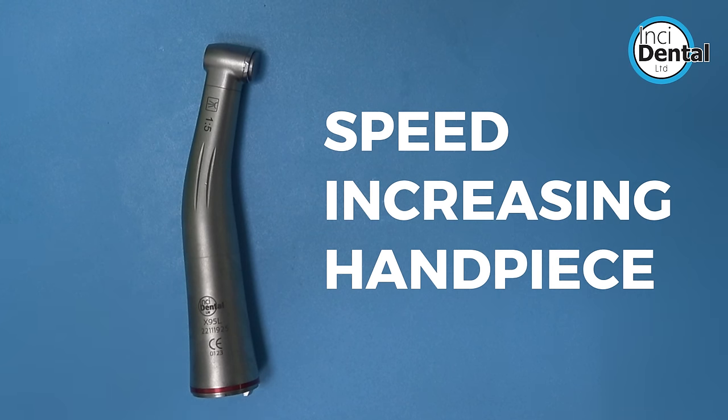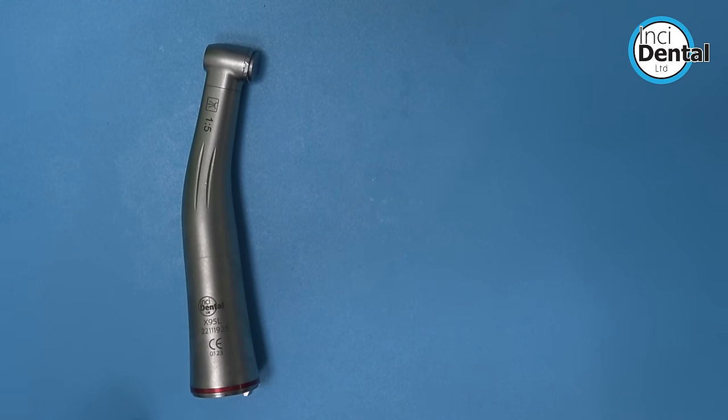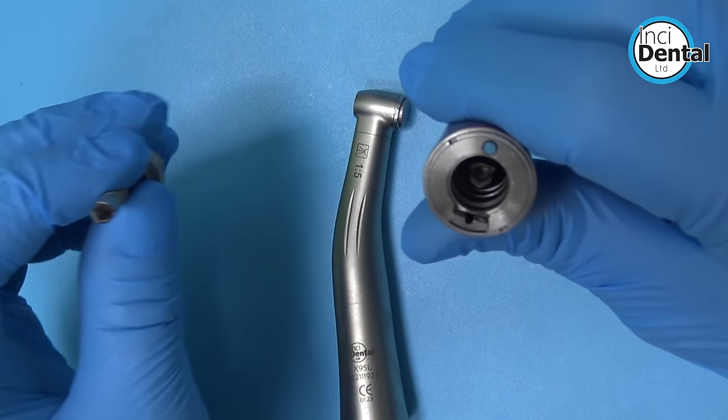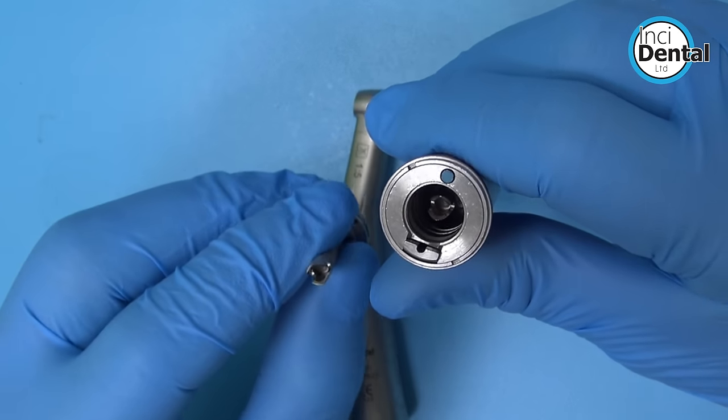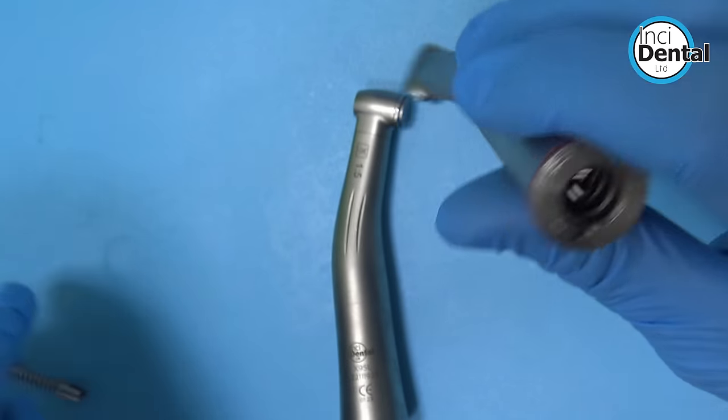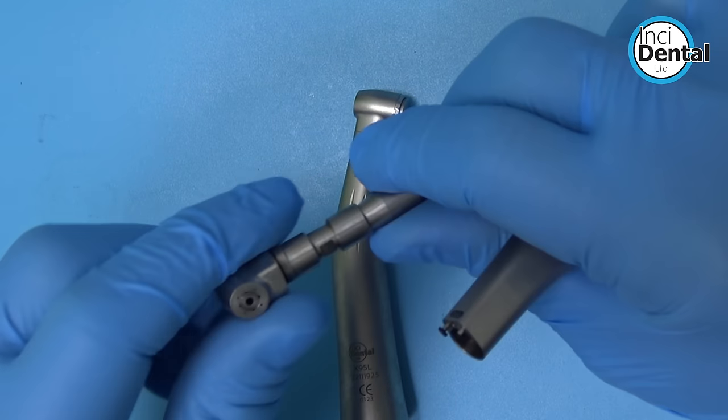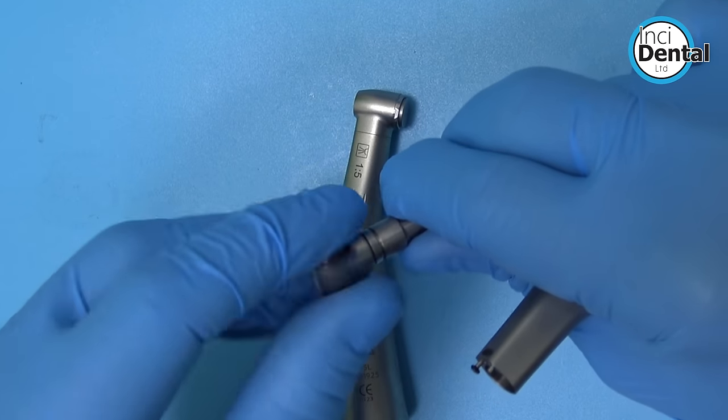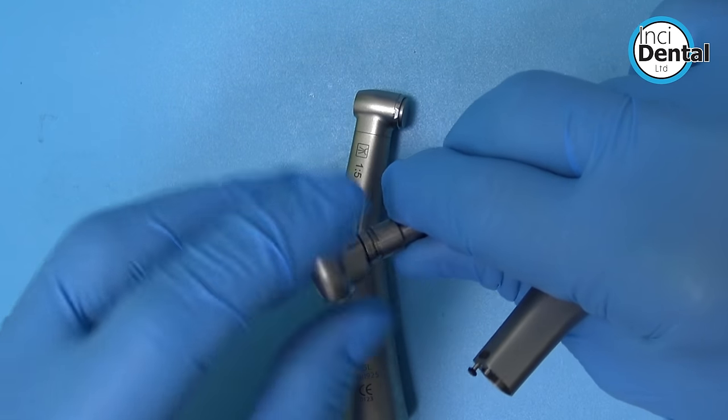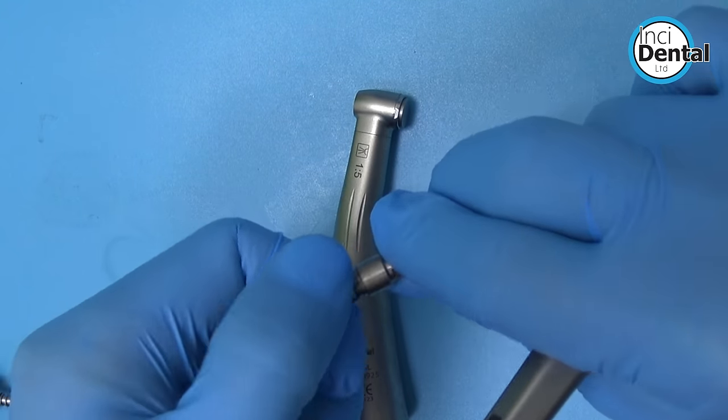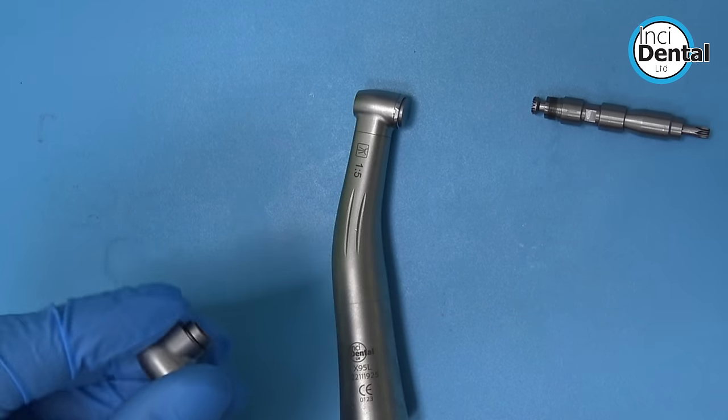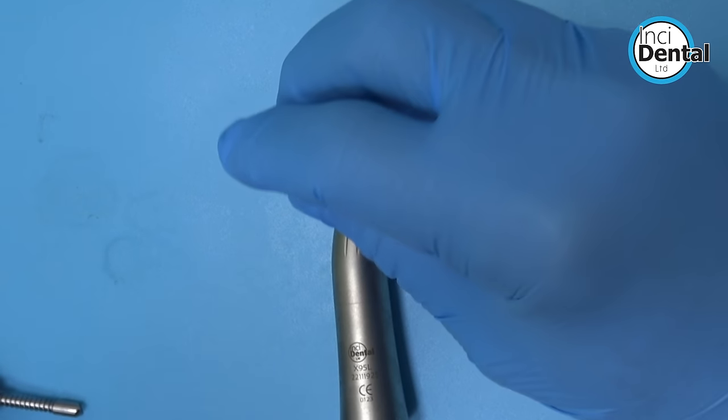Next we have a speed increasing handpiece. Here is the incidental one to five unit. So these handpieces are geared, and here's one I've disassembled to show you. So in the base there you have your dog gear, which drives the middle gear, and then this in turn drives the head cartridge. So all this gearing allows you to get up to 200,000 RPM and provides the superior torque and control that speed increasing handpieces are renowned for.